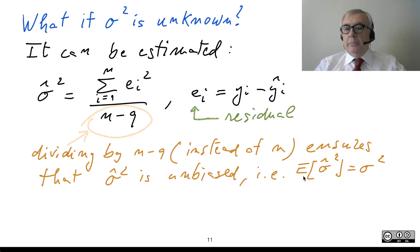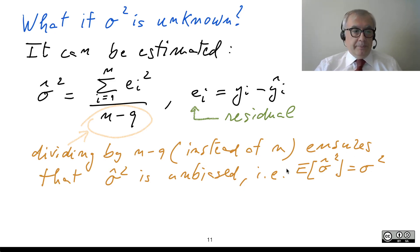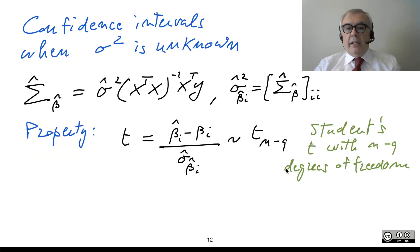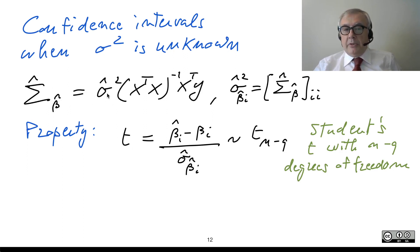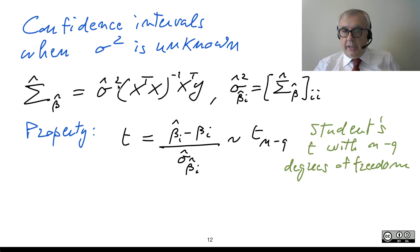Dividing by N minus Q guarantees we are using an unbiased estimator — meaning the expectation of sigma-hat-square equals the true value sigma-square. At this point, we can also estimate the variance matrix of the estimated parameter vector. The true value of this matrix depends on sigma-square, so if we do not know sigma-square, we replace it with its estimate sigma-hat-square.